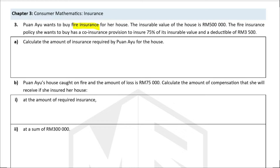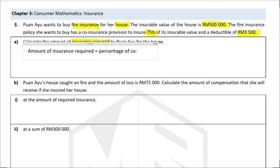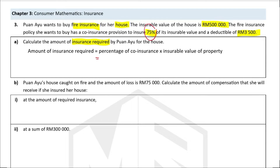Puan Iu wants to buy fire insurance for her house. The insurable value of the house is 500,000 ringgit. The fire insurance policy has a co-insurance provision to insure 75% of its insurable value and a deductible of 3,500 ringgit. The amount of insurance required is 75% multiplied by 500,000 ringgit, which equals 375,000 ringgit.